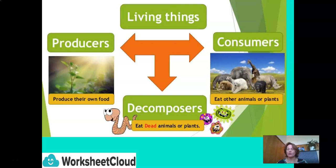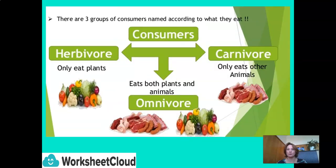Within a food chain or food web, we have producers — they produce their own food through the process of photosynthesis. Consumers eat other animals or plants. Decomposers eat dead animals or dead plants. There are three groups of consumers according to what they eat: herbivores only eat plants; carnivores only eat other animals; omnivores eat both plants and animals.